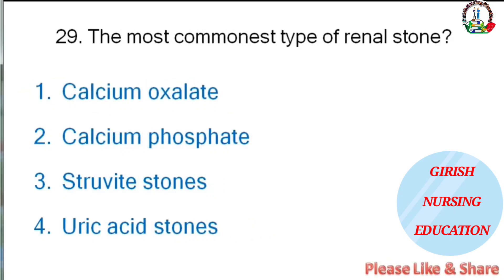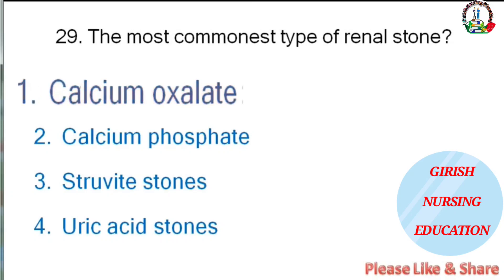The most common type of renal stone — calcium oxalate, calcium phosphate, struvite stones, or uric acid stones? The correct answer is calcium oxalate.